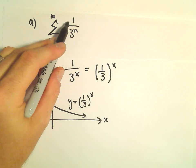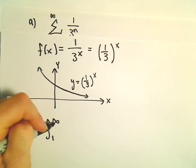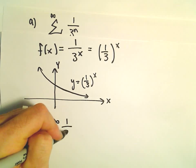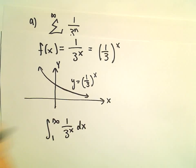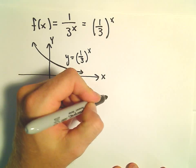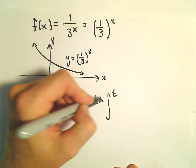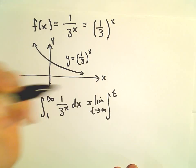So we've got the series from 1 to infinity of 1 over 3 to the n. Correspondingly, I'm going to think about the integral from 1 to infinity of 1 over 3 to the x dx, and then I'm going to decide whether this improper integral converges or diverges. So I'm going to replace my infinity with a t. We'll do the limit as t goes to infinity.